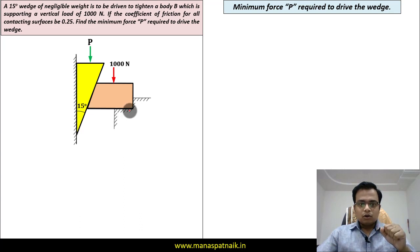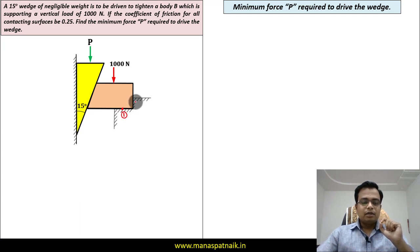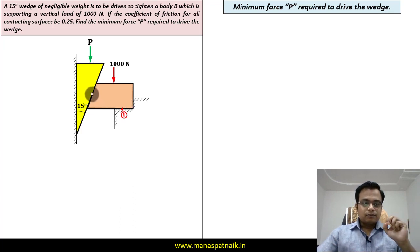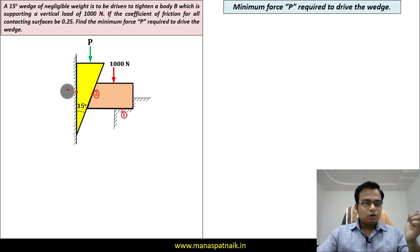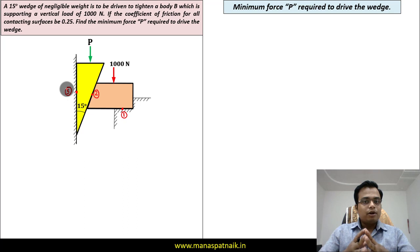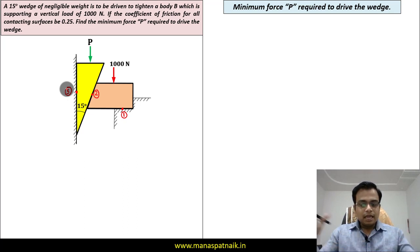The block will slide slightly towards the right along the horizontal surface, so there is going to be friction only at this point — let's call this point one. There will be no friction along the vertical surface. The wedge is in contact with the 1000 Newton block — let's call this point of contact two. Finally, the contact of the wedge with the wall is point of contact three.